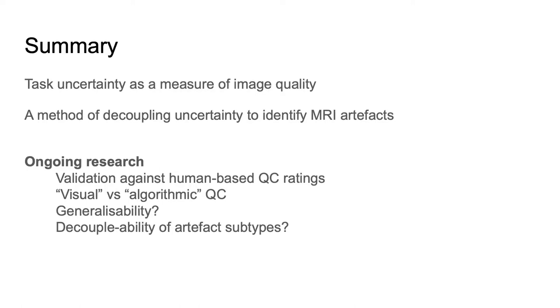In summary, we have proposed that MRI quality can be estimated from the uncertainty in performing a particular task, such as image segmentation. We have presented a method for estimating task-specific image quality using uncertainty predictions, and we have shown that we can approximately decouple sources of uncertainty to localize artifacted regions in MR images. We hope this will lead to a real-time quality control warning system for clinicians and radiologists.